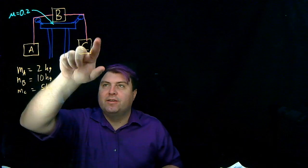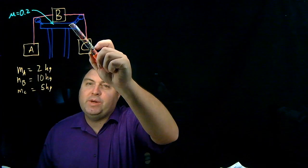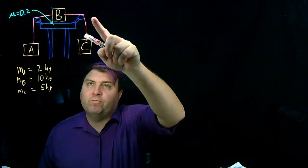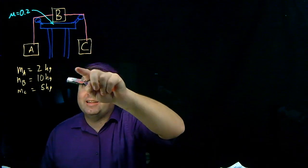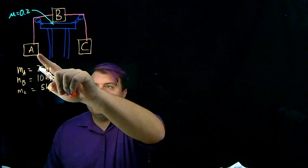So here we have a double Atwood machine, or a modified Atwood machine, where we have B on a table, and there are ideal strings with ideal pulleys and everything, so we don't have to worry about stretching or anything like that. We've got a mass A and a mass C, and we see that C is bigger than A.